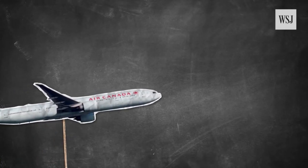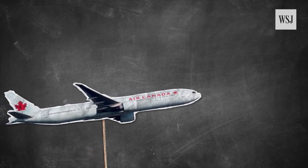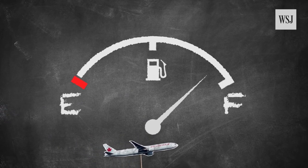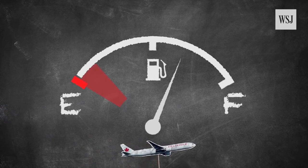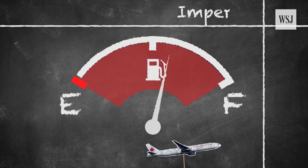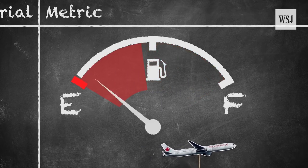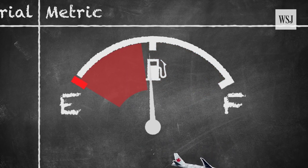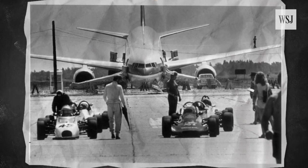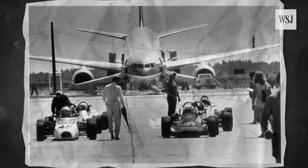In 1983, an Air Canada plane ran out of fuel in the middle of a flight due to a metric mix-up. A malfunction on the fuel indication system forced the ground crew to manually calculate how much fuel was needed, but the fuel was measured in pounds instead of kilograms. That caused the plane to run out of fuel halfway through its planned route. Fortunately, the pilot managed to land safely at a Royal Canadian Air Force base, and none of the passengers and crew on board were seriously injured.